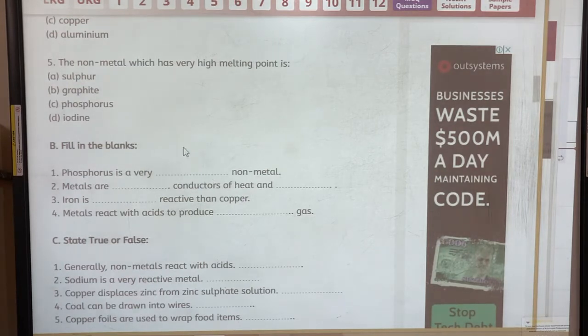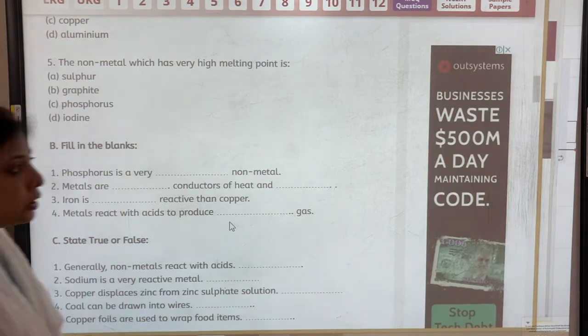Fill in the blanks. Phosphorus is a very blank non-metal. It is there in the book. Metals are blank and blank. Metals are blank conductors of heat and blank. We have studied it. Iron is blank reactive then copper. We just now we have studied it. And metals react with acids to produce which blank gas?